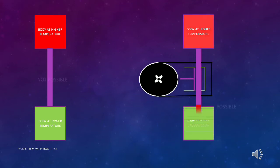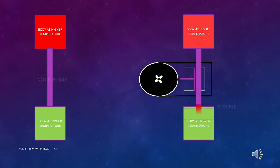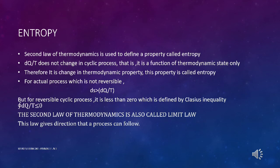In the refrigeration principle it is a cyclic process — heat is taken from the lower temperature body to the higher temperature body and cycled back. This is possible when using an external agency. Without the help of external engines, compressors, or other means, it is not possible to transfer heat from a lower temperature to a higher temperature body.